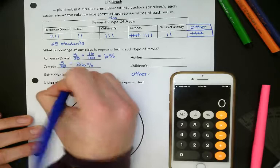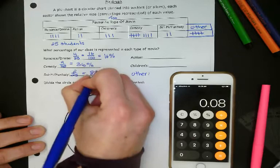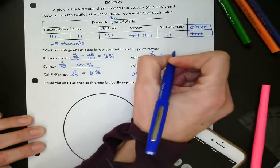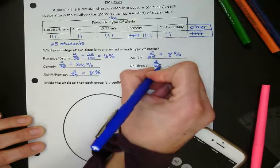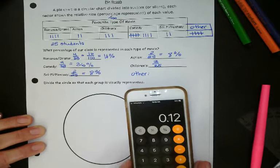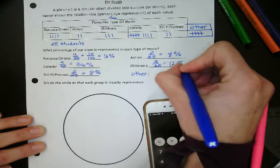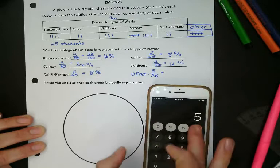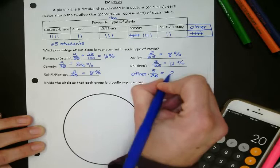Okay, sci-fi, there were two out of 25. Two out of 25. So that's 8%. Action also had two. So I can just look back to my other one and know that it's 8%. Children's had three. So same thing. Three divided by 25 is equal to that. Times it by 100, and we get 12%. And in the other category, we had five out of 25. So that should be 20%.